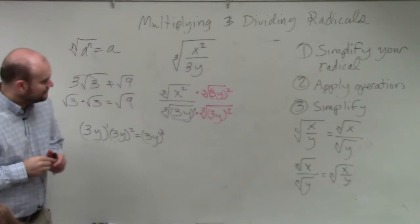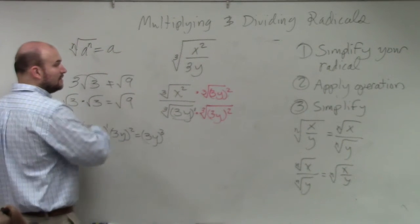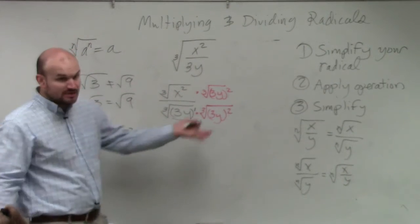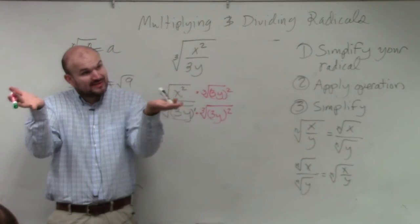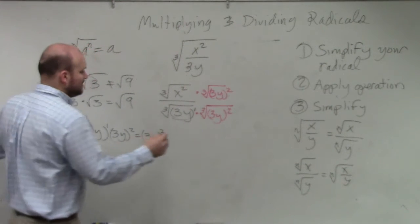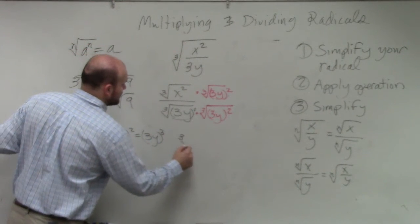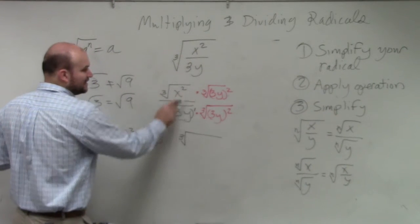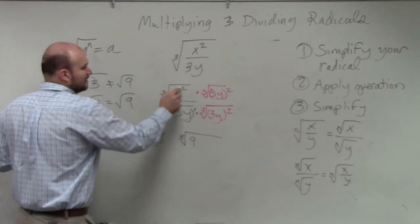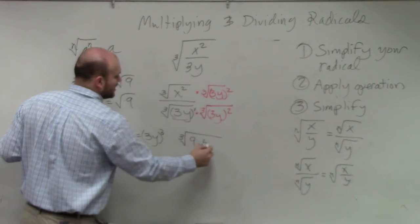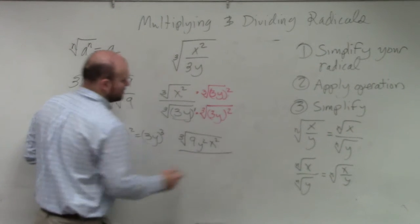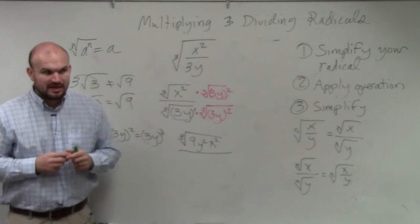So now we have radicals we're multiplying. Remember the rules of radicals. If you have two radicals with the same index, you can just multiply them on the inside, right? So what I end up having is the cube root of my numerator is now going to be 3 squared is 9, y squared is y squared, and then x squared. Does everybody see that's my numerator?